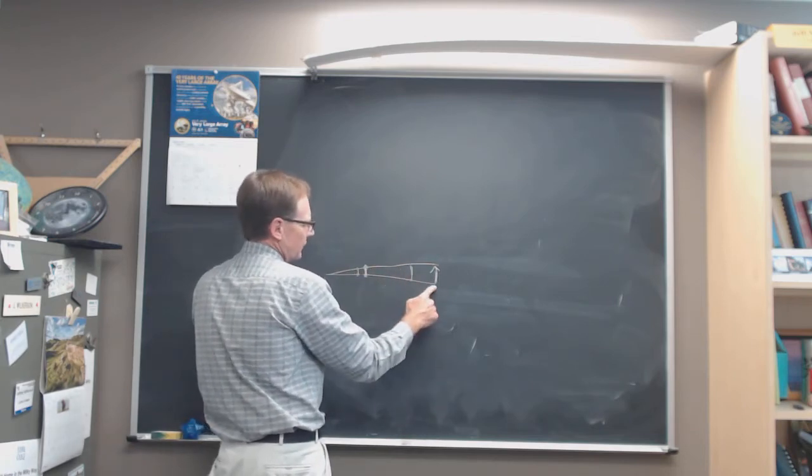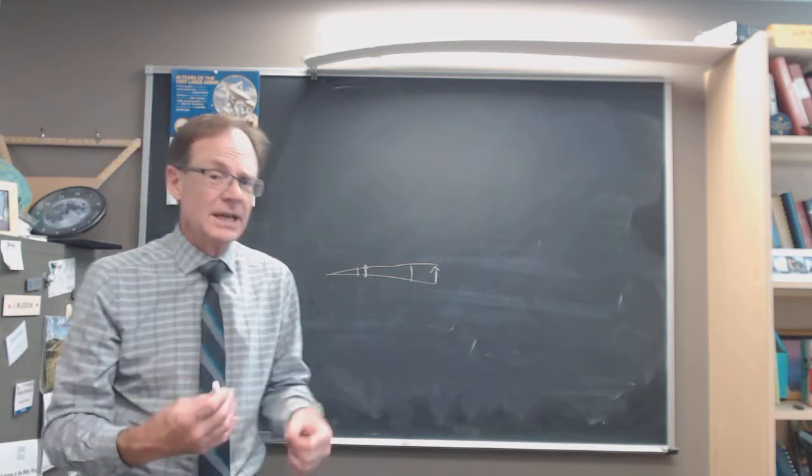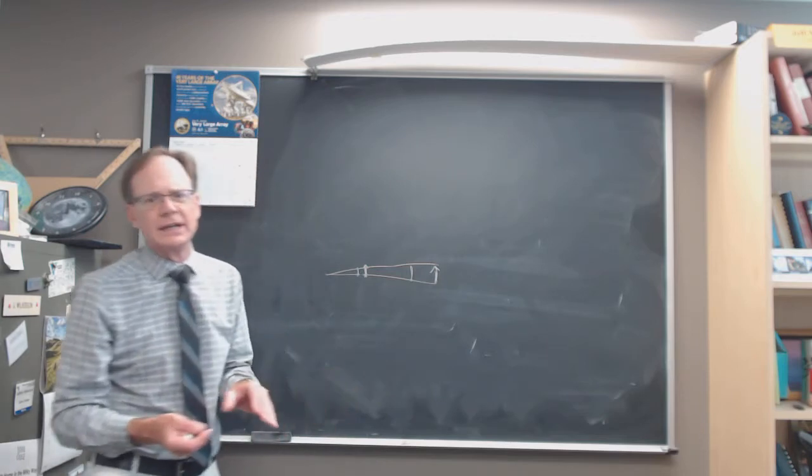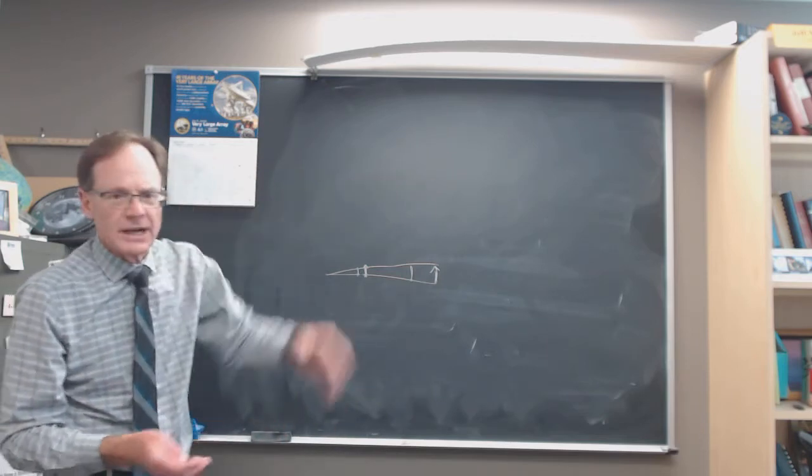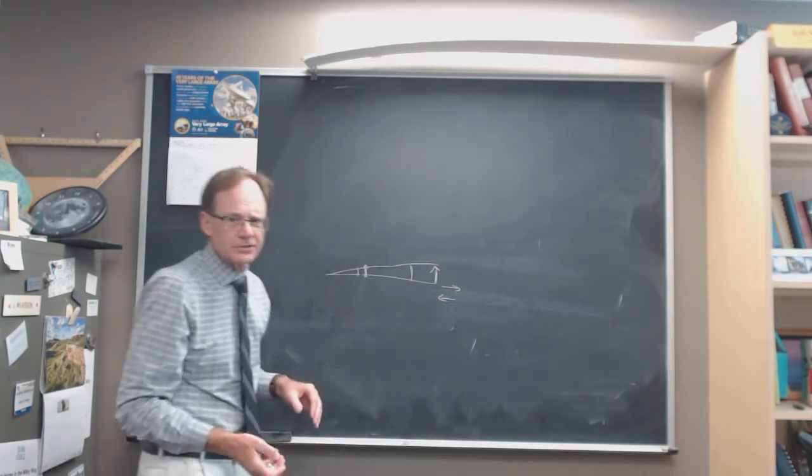A star that's much further away has to be moving much more quickly, its physical velocity V has to be much quicker. And this is V that is transverse to our line of sight. Radial velocity, we have to get from Doppler shifts.